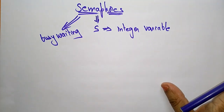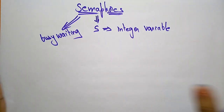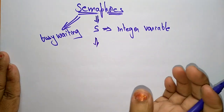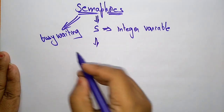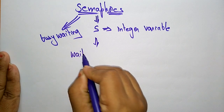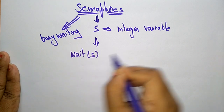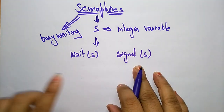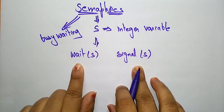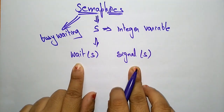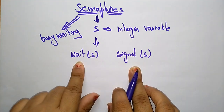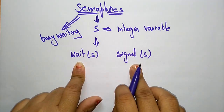A semaphore can be accessed via two indivisible atomic operations. The semaphore will use two indivisible atomic operations: wait(S) and signal(S). These are the two atomic operations used by the semaphore.